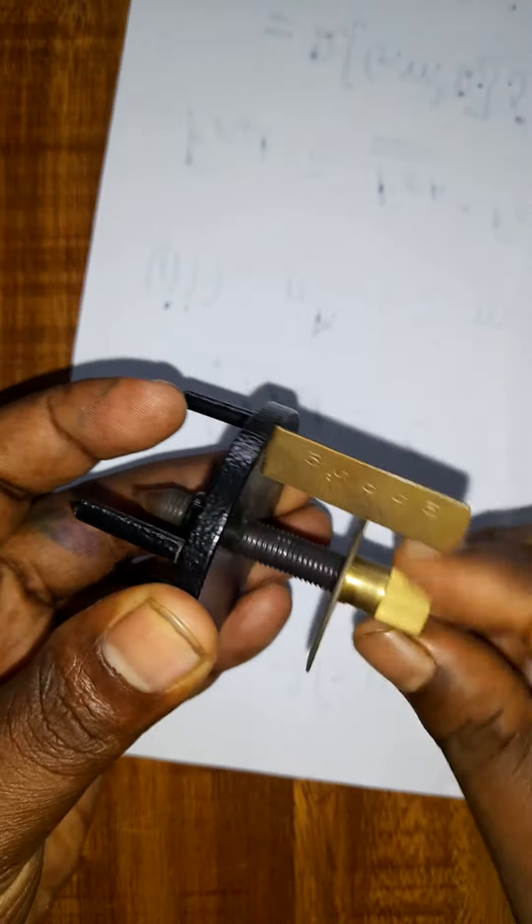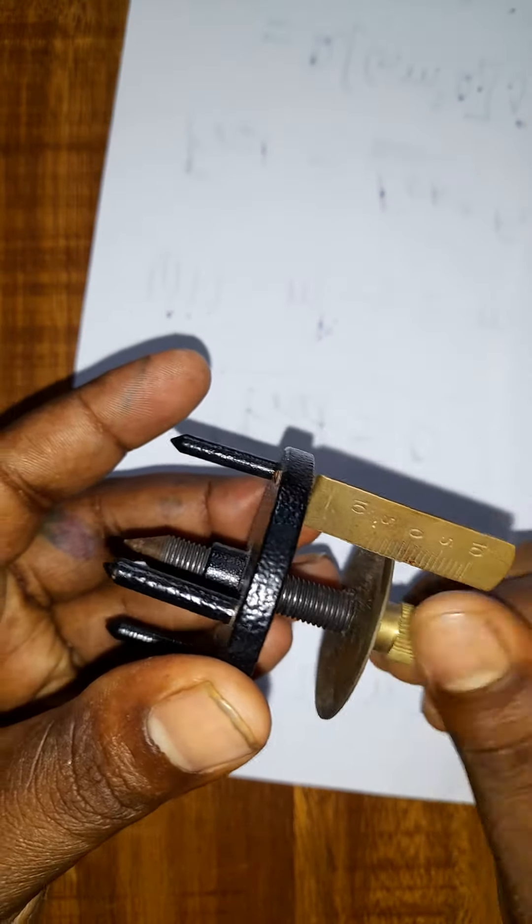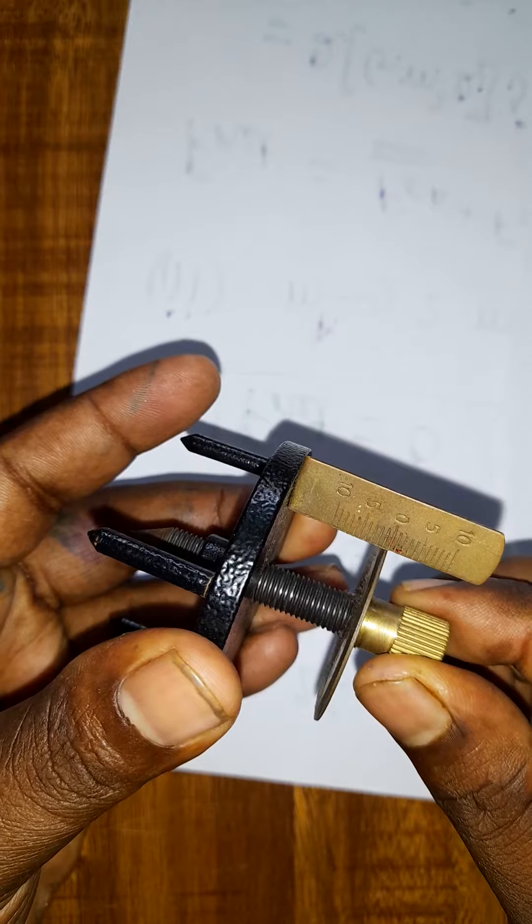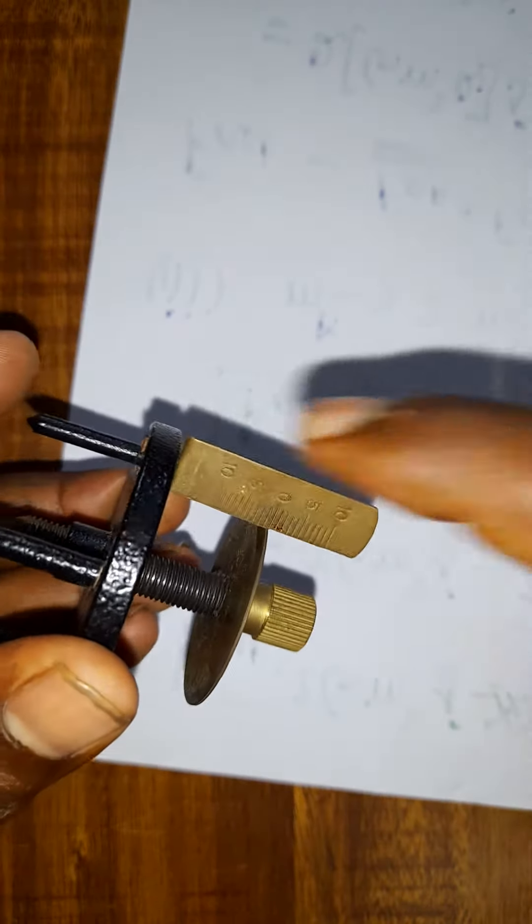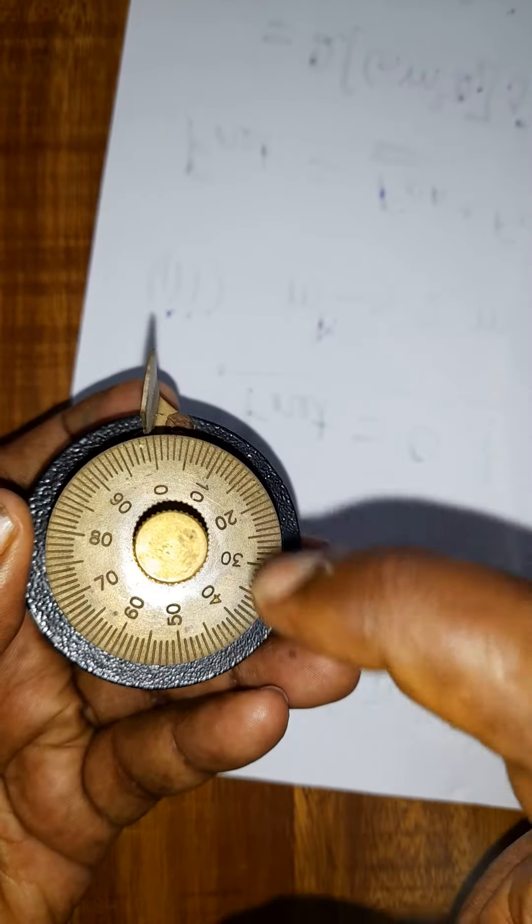When we are using the spirometer, we need to know what is the least count of the spirometer. Actually, 1 mm is divided with 100 division. It is called main scale reading, this is called circular scale reading.